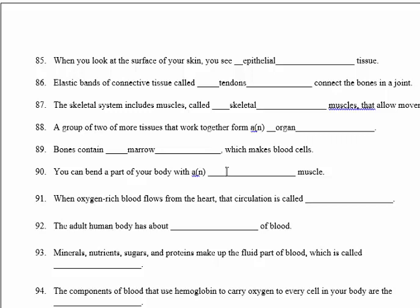Number 90: you can bend a part of your body with a flexor muscle. Number 91: when oxygen-rich blood flows from the heart, this circulation is called systemic circulation.